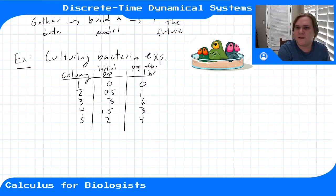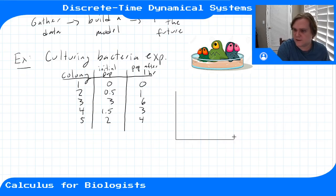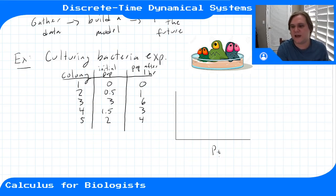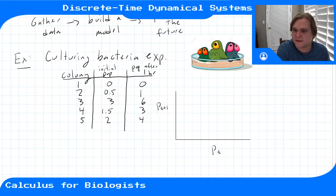So if we were to plot this data, we'll get a plot. On the x-axis we'll have the initial population — our population at time t, whatever the time was when we started the experiment. And then on the y-axis, we'll have population at t plus one, one hour later.